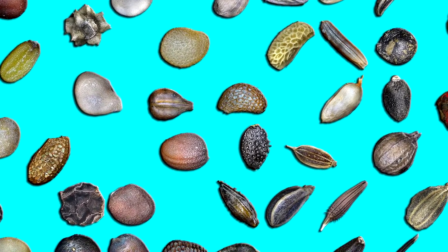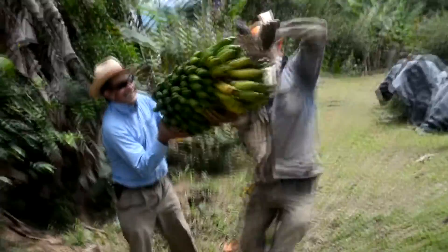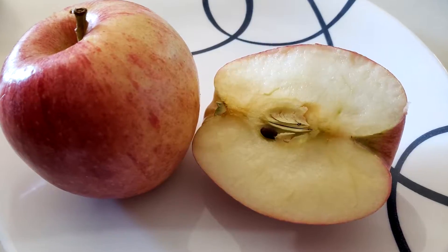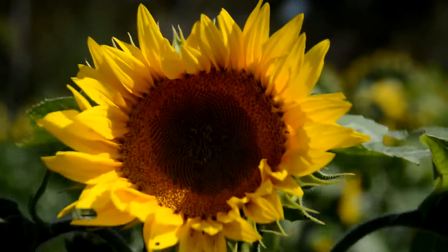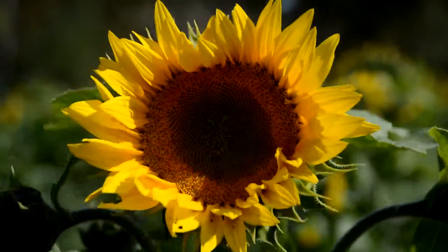Seeds contain new plants. Some seeds form inside plant fruits, like apples, oranges, and pumpkins. Some seeds form on the outside, like sunflowers.